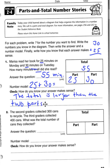Your two parts of 25 and 30 are both smaller than your total of 55. That's one way you could have known the answer was correct.